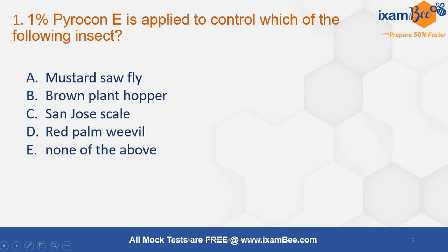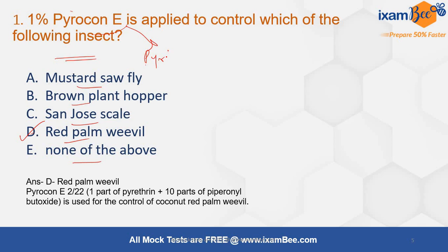The first question is: 1% Pyrocon E is applied to control which of the following insects? Options are mustard aphid, brown plant hopper, San Jose scale, red palm weevil, or none of the above. The correct answer is red palm weevil. The coconut red palm weevil is controlled by Pyrocon E, which is made up of 1 part of pyrethrin and 10 parts of piperonyl butoxide. This pyrethrin or pyrethrum is derived from the dried flowers of Chrysanthemum cinerariaefolium.